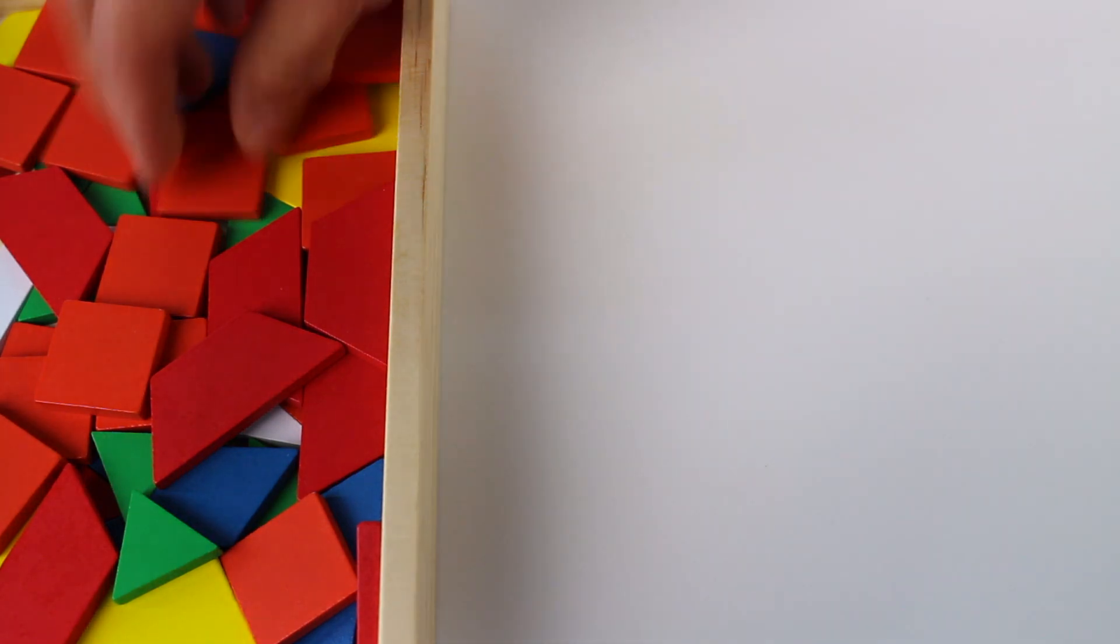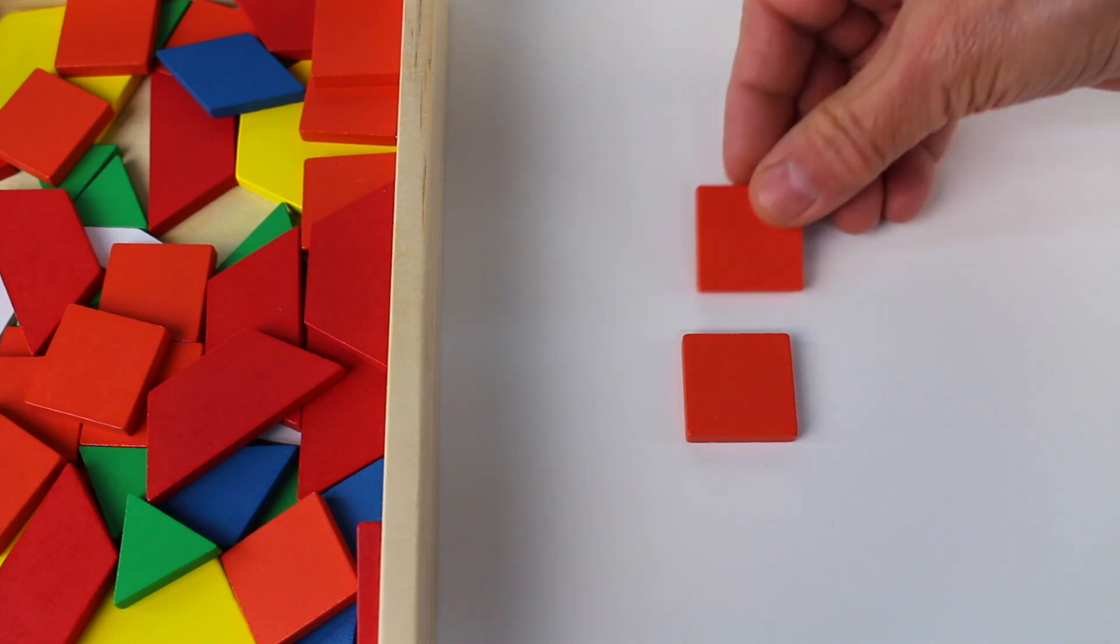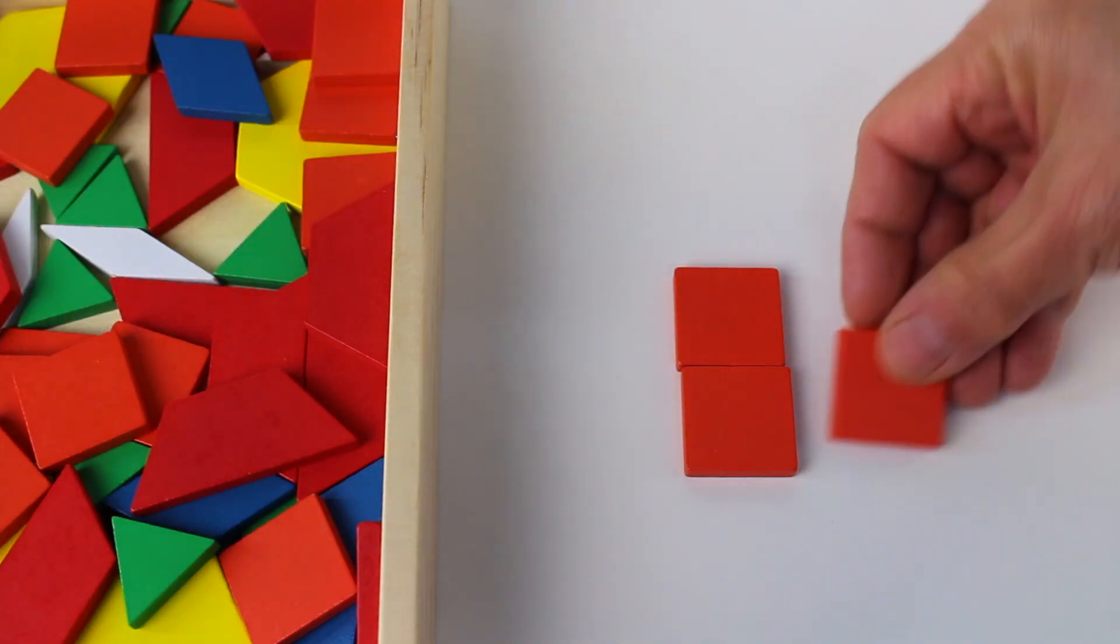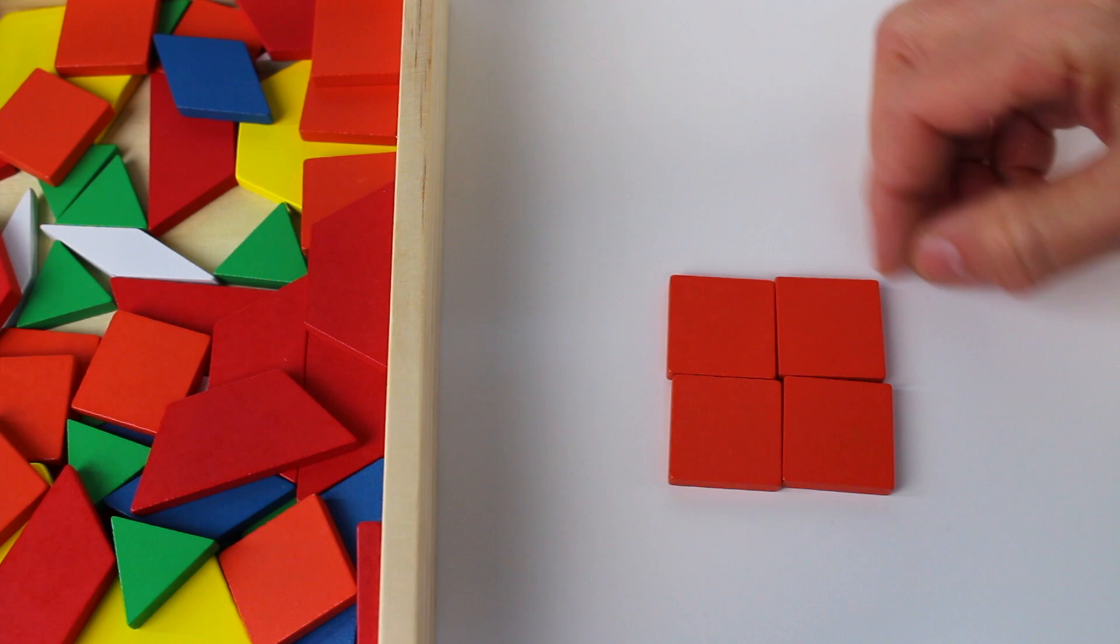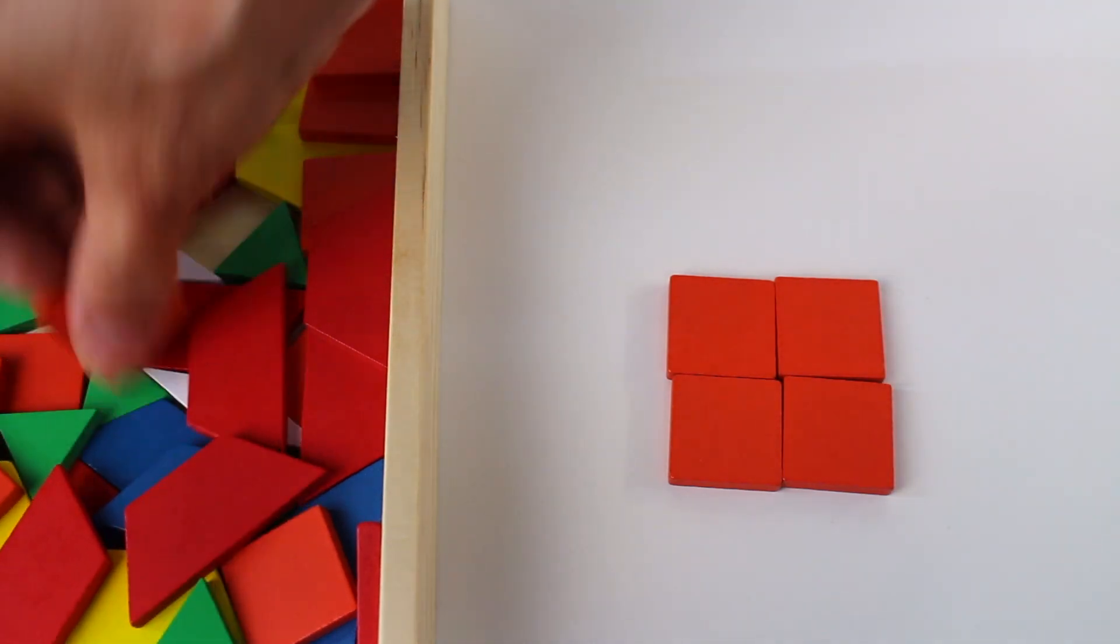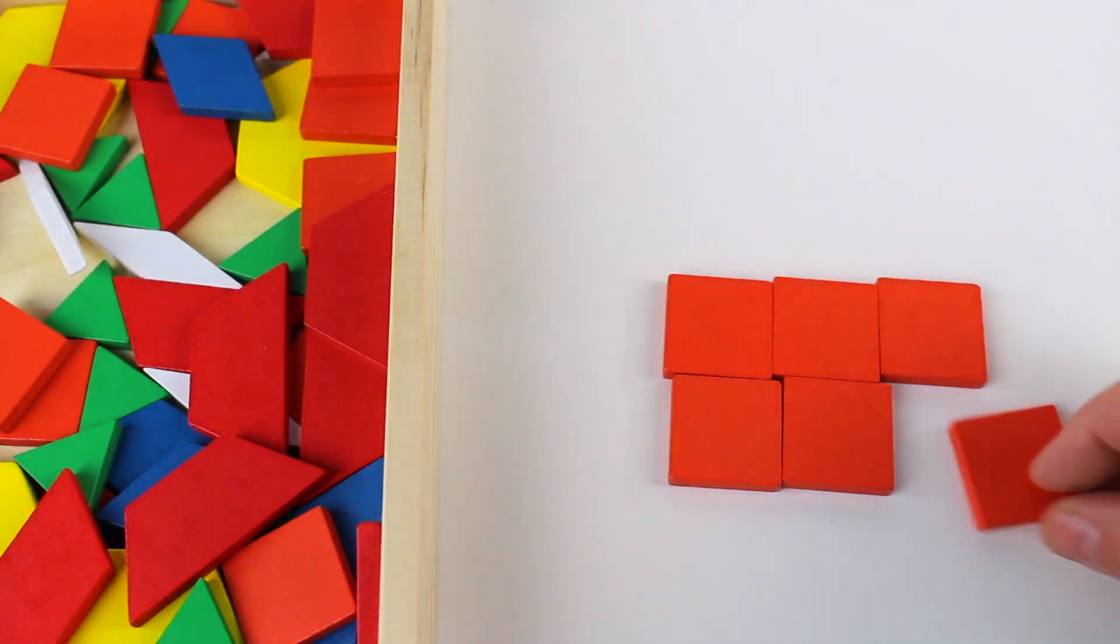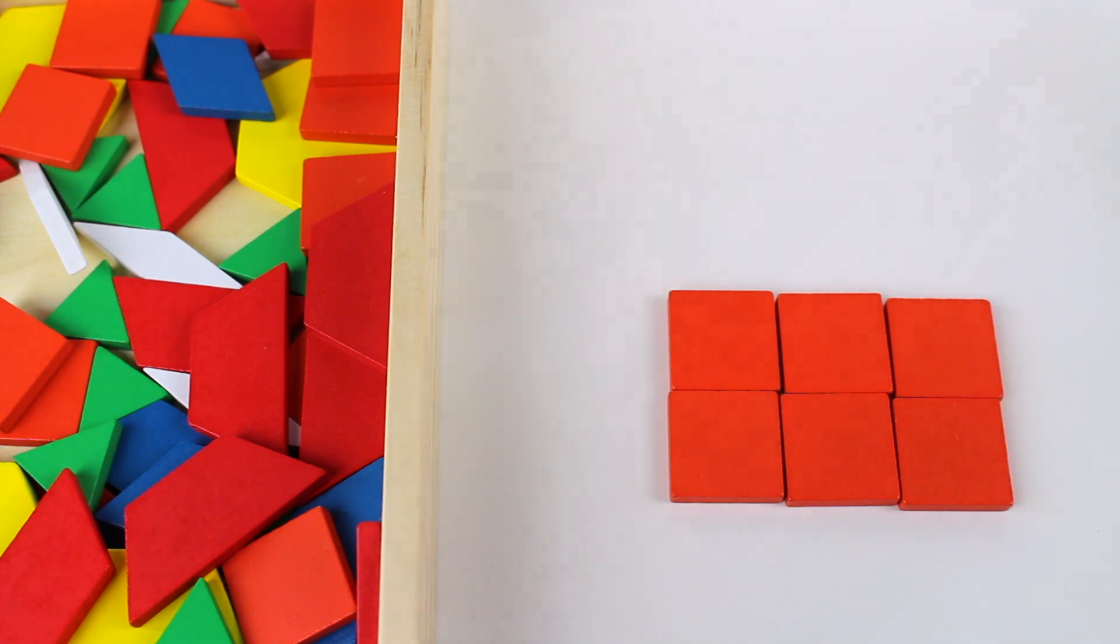And let's put together some orange squares. Look, it's a rectangle. And look, it's a square. Now let's add two more squares to make another rectangle. Isn't that funny? Wow, it's a rectangle.